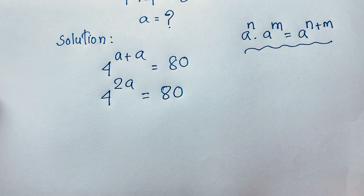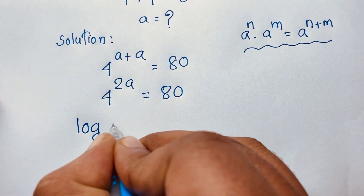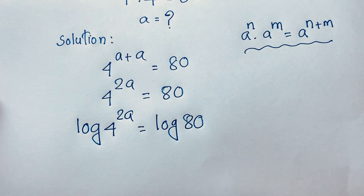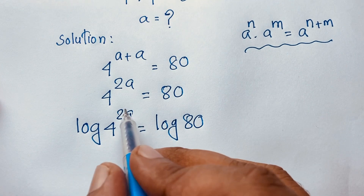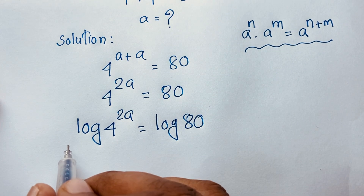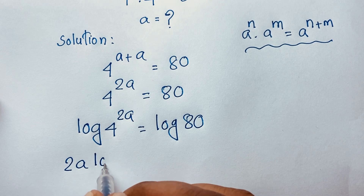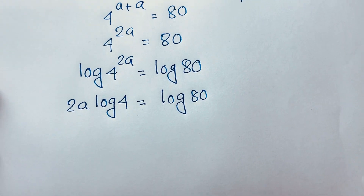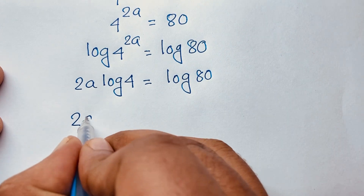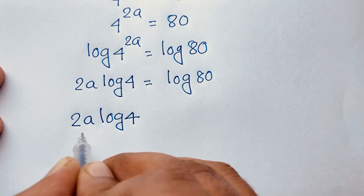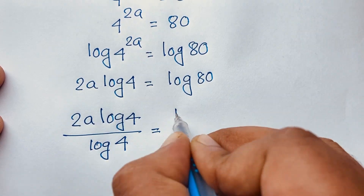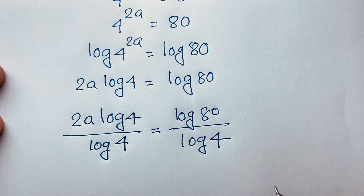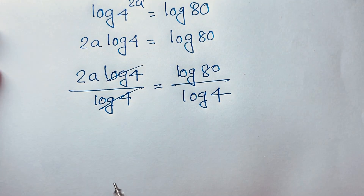Now I apply the natural log to both sides: log of 4 to the power 2a is equal to log 80. The exponent moves out according to logarithmic rules, giving us 2a log 4 equals log 80. I then divide both sides by log 4, so 2a log 4 over log 4 equals log 80 over log 4.